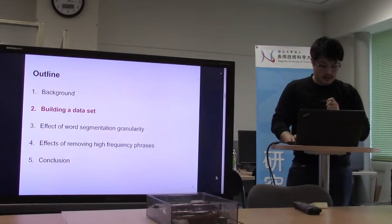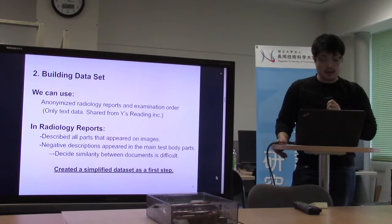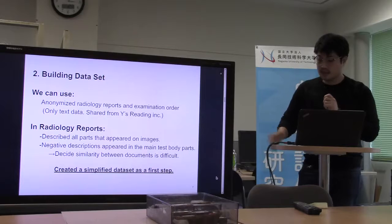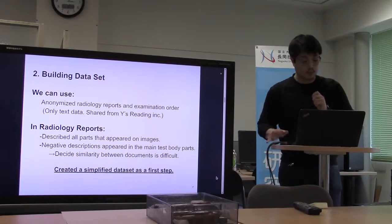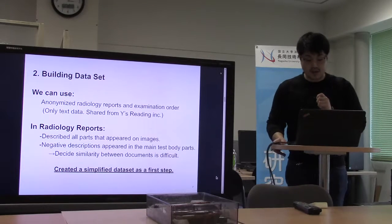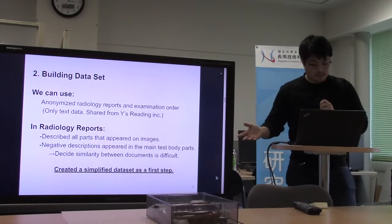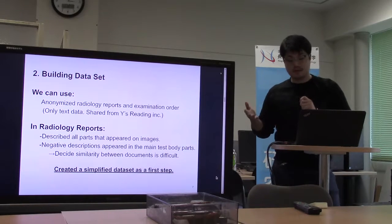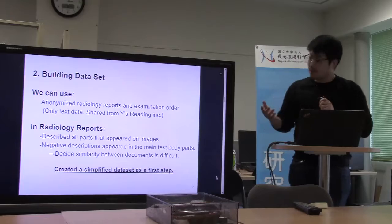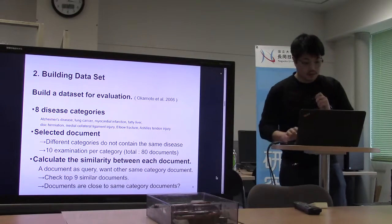Next, building a dataset. We created a dataset for our experiments. We can use anonymized data as radiology reports, which is text-only data. In radiology reports, all parts that appear on the image are described, including negative descriptions of main body parts. So even for humans, deciding similarity between documents is difficult. Therefore, we created a simplified dataset as a first step.